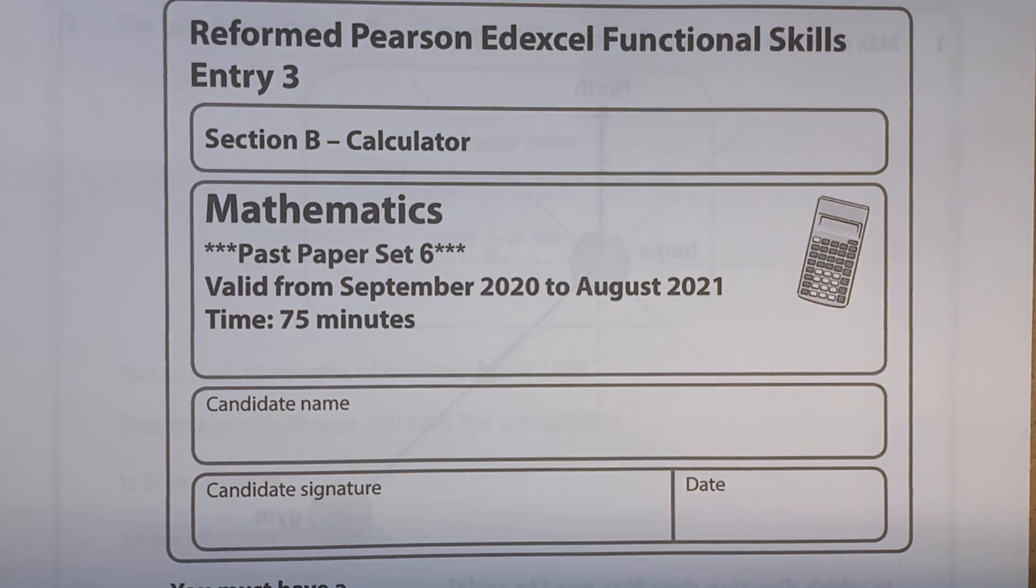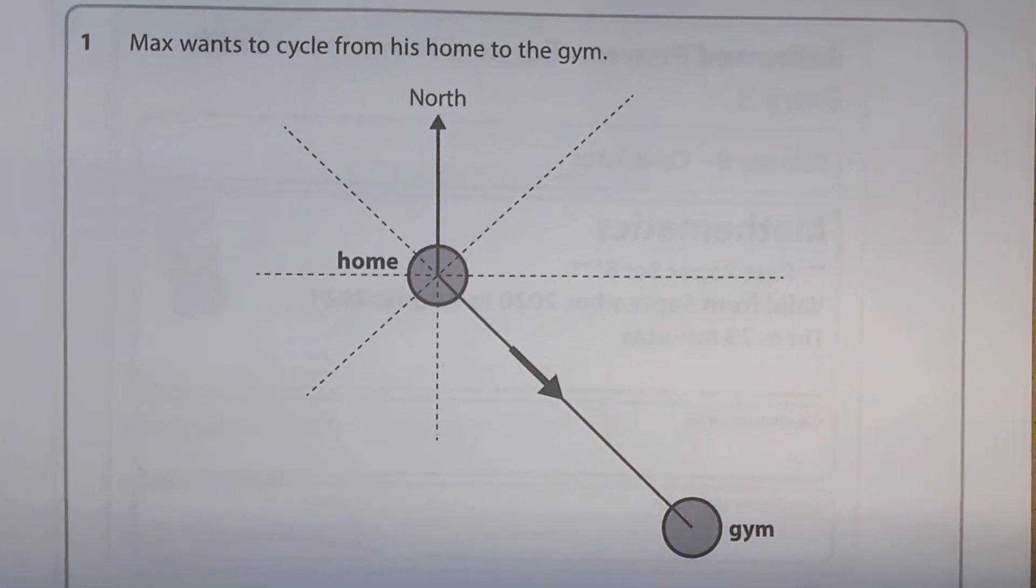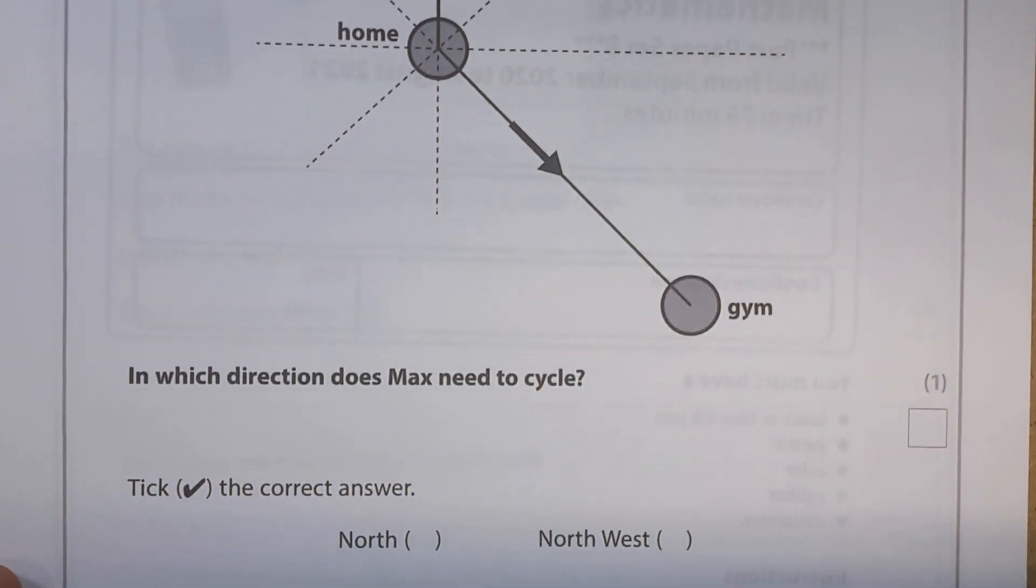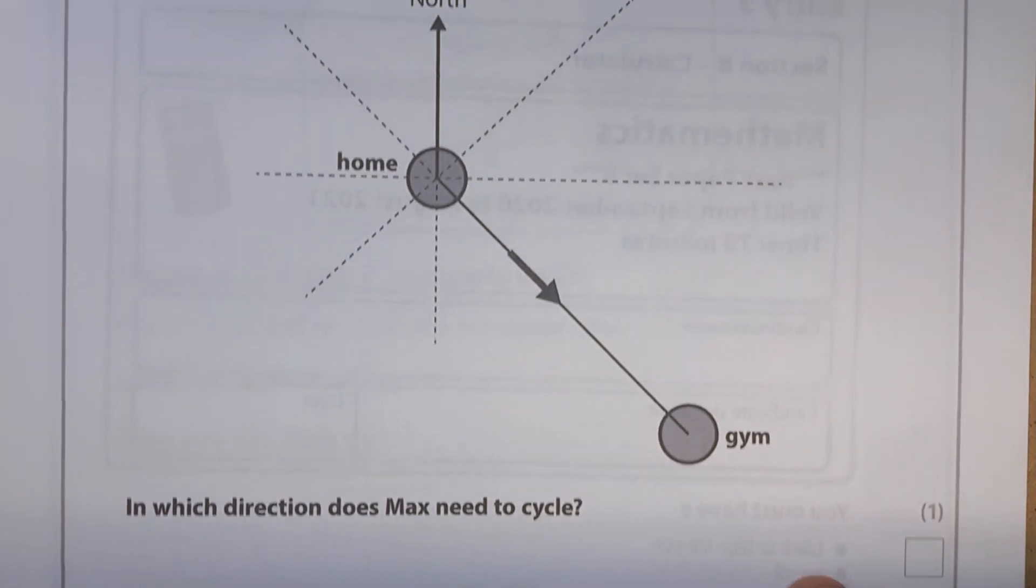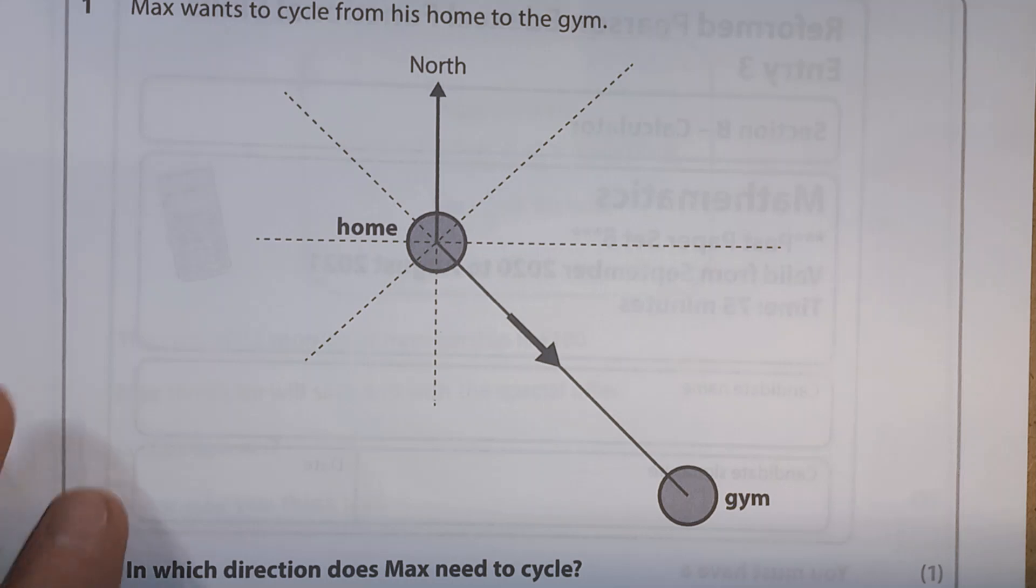And now we're on to the calculator section. Question 1, Max wants to cycle from his home to the gym. And we've got a bit of a map there. In which direction does Max need to cycle? And we've got lots of options down here. But let's try and work it out first and then see if one of those options is available.